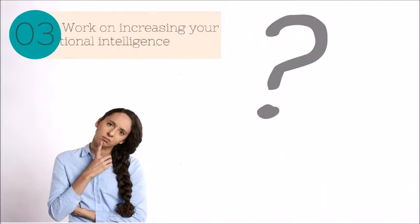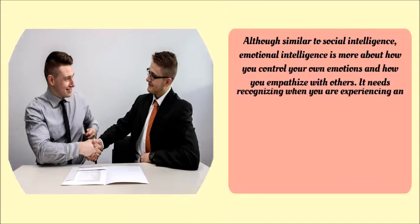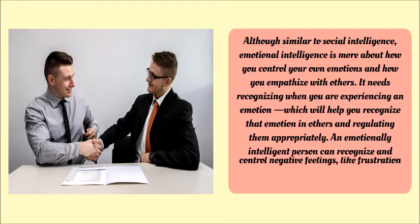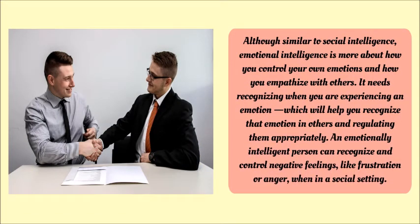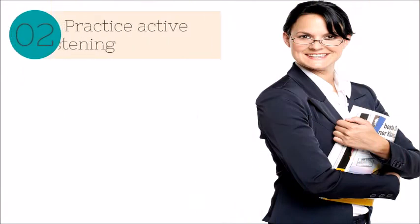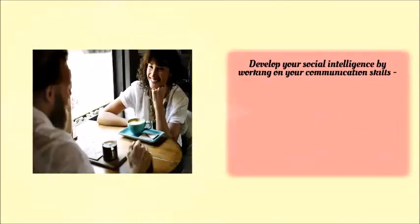Number three: work on increasing your emotional intelligence. Although similar to social intelligence, emotional intelligence is more about how you control your own emotions and how you empathize with others. It involves recognizing when you are experiencing an emotion, which will help you recognize that emotion in others and regulate them appropriately. An emotionally intelligent person can recognize and control negative feelings like frustration or anger when in a social setting.